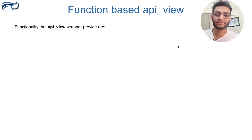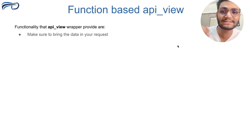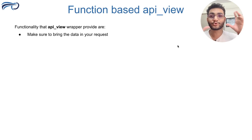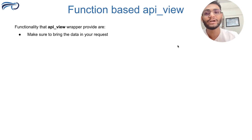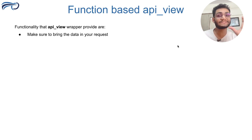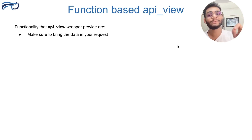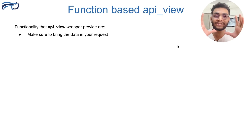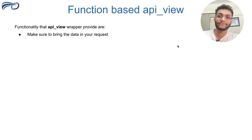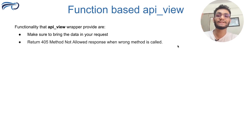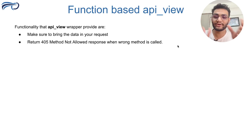The api_view decorator brings some functionality with itself. The first functionality is that instead of having to trim and parse the data to get it in dictionary format, with the api_view decorator you will get the data directly within the request itself. The second functionality is that it throws a '405 Method Not Allowed' error whenever you pass the wrong method.